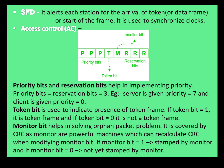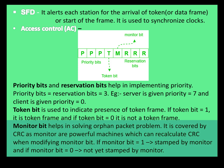The active monitor is a device on the ring that maintains the ring. The monitor bit helps in solving the orphan packet problem. It is covered by CRC as monitors are powerful machines which recalculate CRC when modifying the monitor bit. If the monitor bit is one, it is checked by the monitor; if not, it is not checked by the monitor.